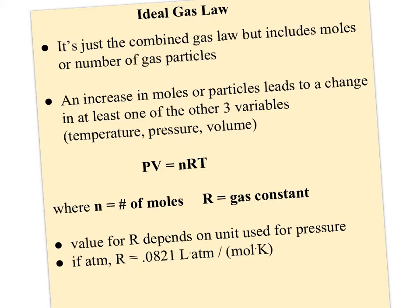So how does the ideal gas law predict that gases will behave? Well, it's really just the combined gas law, but as I said, now we have the fourth variable in there. So besides pressure, volume, and temperature, we also have the number of gas particles or moles. And an increase in the amount of gas or a decrease in the amount of gas is going to change at least one of the other three variables. So if you put more gas into a balloon, either the temperature, pressure, or volume has to change, or possibly all three.